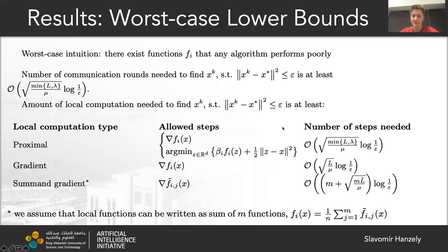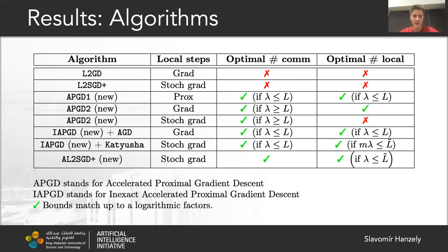Now, with lower bounds established, let's proceed to the algorithms. Here we present a table of algorithms for our setup. We can see that these algorithms are matching lower bounds for the number of communication rounds and computation rounds, depending on the value of lambda. Also note that these algorithms require different kinds of steps on the devices to be taken.